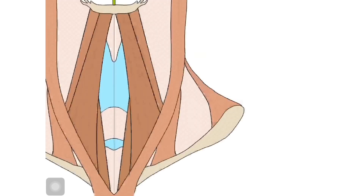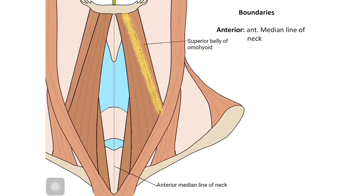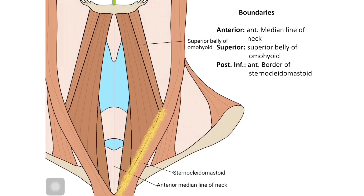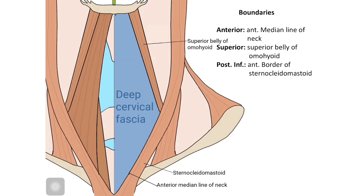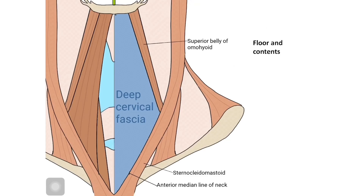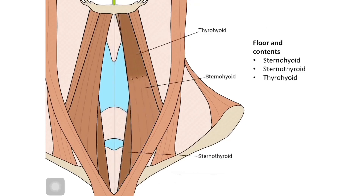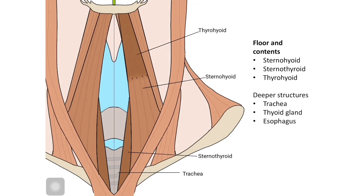The last triangle is the muscular triangle. It is anteriorly bounded by the anterior median line of the neck, superiorly bounded by the superior belly of omohyoid, and posteriorly bounded by the anterior border of sternocleidomastoid — specifically the anterior one-third part of it forms the postero-inferior boundary. The roof is formed by the deep cervical fascia. The floor and contents are the sternohyoid, the sternothyroid, and the thyrohyoid muscles. The deeper structures include the trachea, the thyroid gland, and the esophagus.